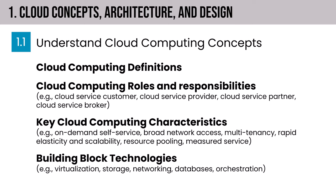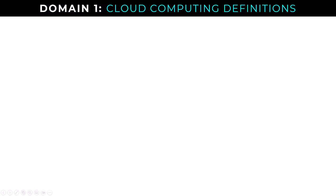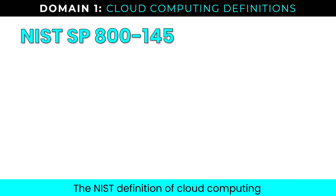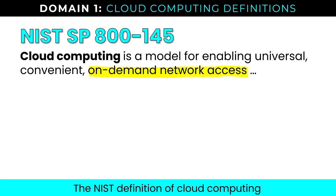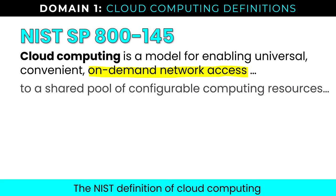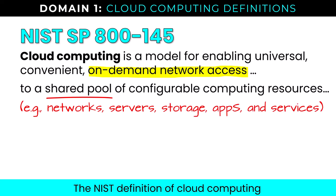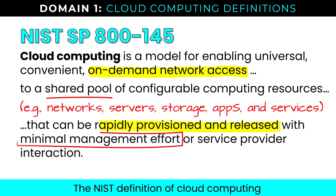First up is NIST Special Publication 800-145, the NIST definition of cloud computing. This is a model for enabling universal, convenient, on-demand network access to a shared pool of configurable computing resources — including networks, servers, storage, apps, and services — that can be rapidly provisioned and released with minimal management effort or service provider interaction. That's the promise of the cloud: resource consumption for the customer is easier, while the CSP handles the care and feeding of the underlying cloud infrastructure.